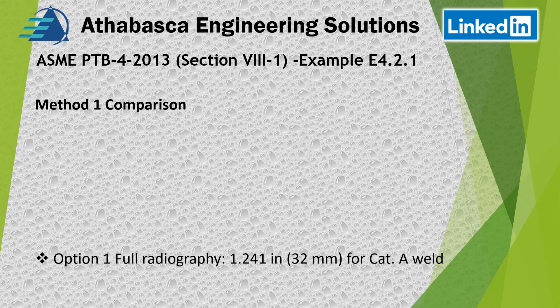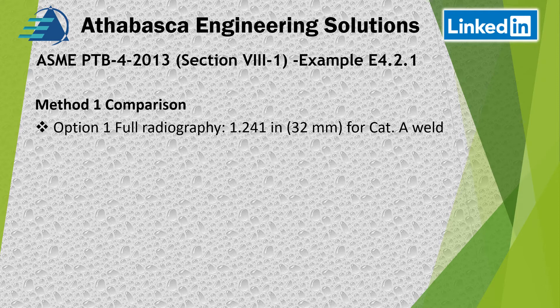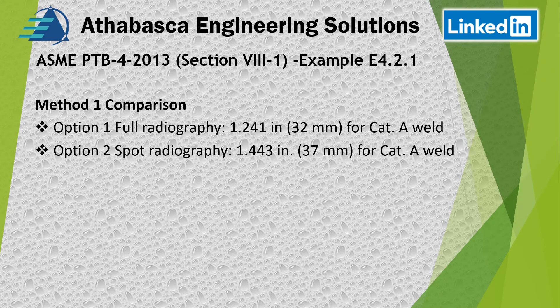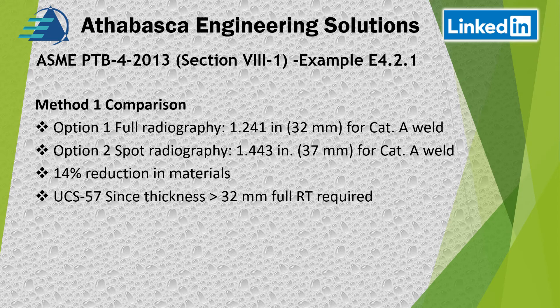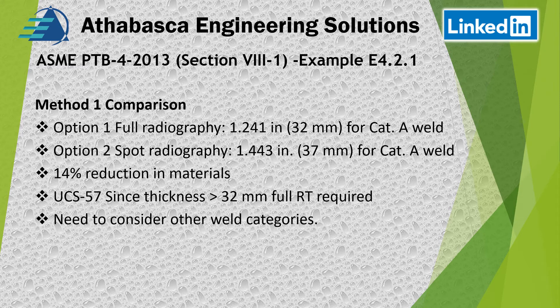To summarize the method 1 comparison: option one with full radiography gives us 32 mm. Remember, this is just for the category A circumferential weld — you still need to go through the procedure for category B and C welds with their respective equations. Option two with spot radiography requires a thicker plate. We can reduce materials by 14% using full radiography, and because of UCS-57, full RT is required anyway. You also need to consider the other weld joint categories in your final analysis.